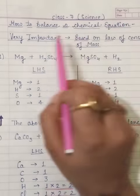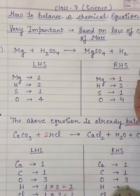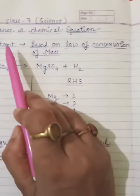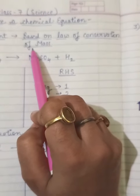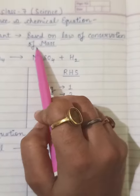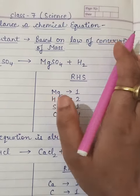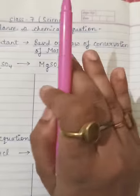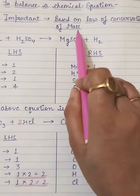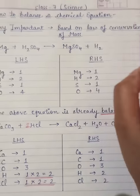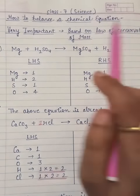So let's come to the topic without wasting time: how to balance a chemical equation. I have written here 'very important', which means it is important. I have written 'based on law of conservation of mass'. Please don't write bookish language here. I will explain in simple language what this statement means, both the meaning and the complete balancing.